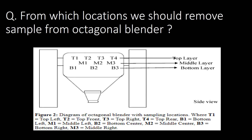From which locations should samples be removed from an octagonal blender? You can refer to the schematic shown for identifying sampling locations. Samples should be removed from the top layer, middle layer, and bottom layer.